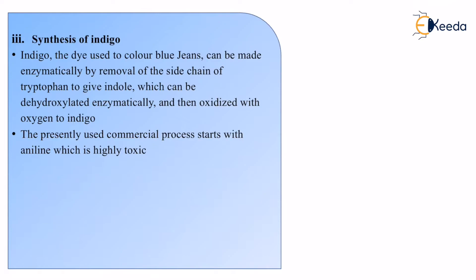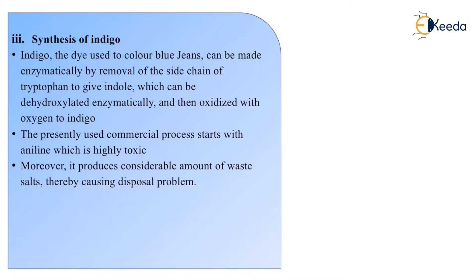The presently used commercial process starts with aniline, which is highly toxic. This process can be done using aniline — a very common compound. It is a benzene ring with NH2 on it. NH2 is a primary amine, so when a primary amine is attached to a benzene ring that structure is known as aniline. In various factories, it is done with the help of aniline, and that aniline is highly toxic and very poisonous in nature. Moreover it produces a considerable amount of waste salts, thereby causing disposal problems.